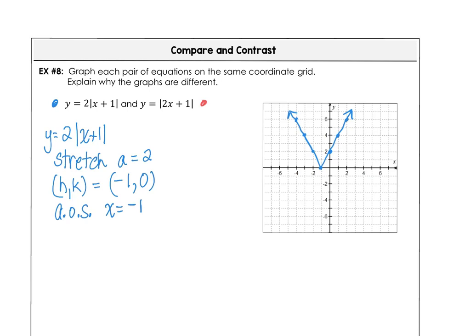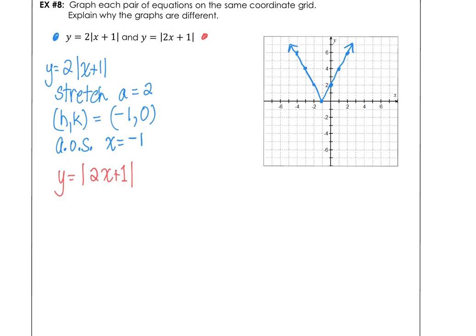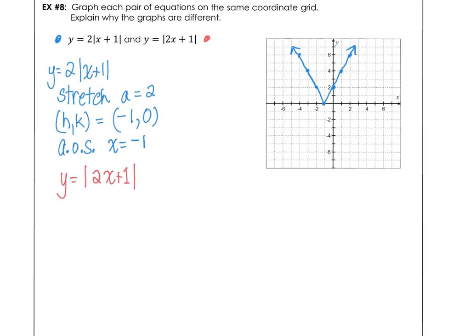Our second graph in red, y equals the absolute value of 2x plus 1, requires setting the argument 2x plus 1 equal to zero. That happens when x is negative 1 half. We could rewrite this as 2 times the absolute value of x minus negative 1 half, so we're shifting 1 half unit to the left.